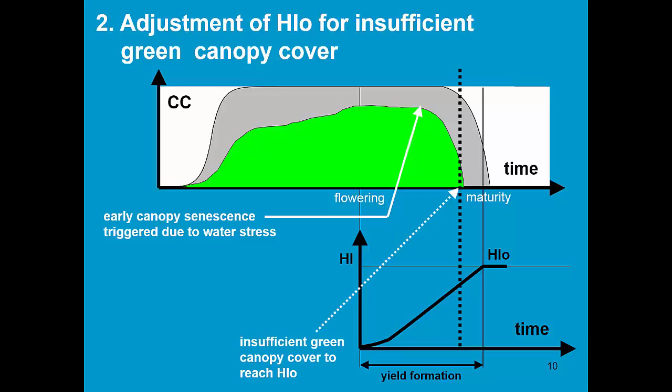And as such, there is insufficient green canopy cover to reach the harvest index. And the harvest index is now adjusted due to insufficient green canopy cover. There is not enough energy anymore to fill the grains.